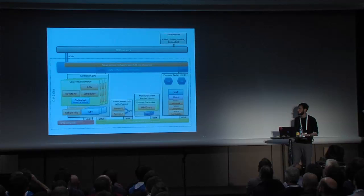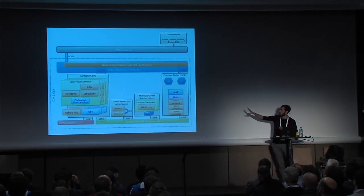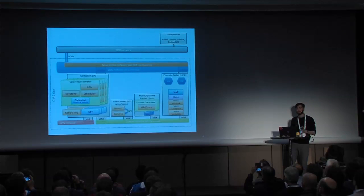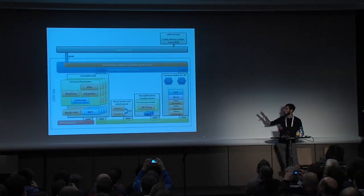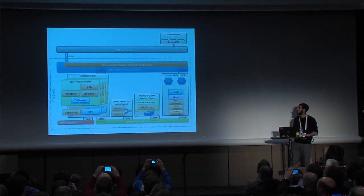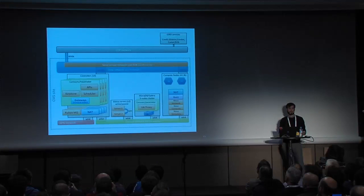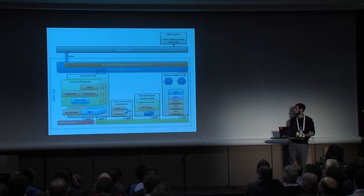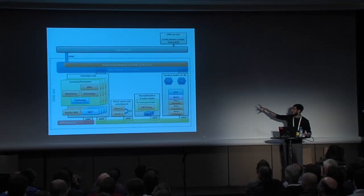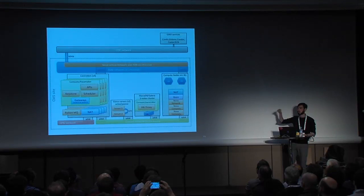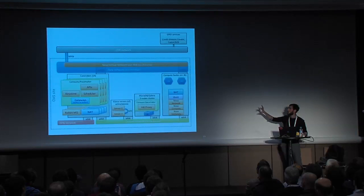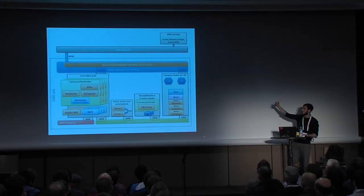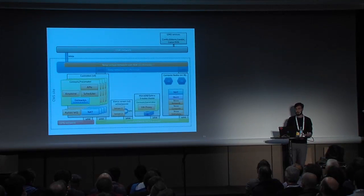We ended up with an architecture like this: on one side, four controller machines running our core services. In the middle, the Glance service with two instances and a dedicated MariaDB cluster with three machines. All remaining machines are just Nova hypervisors — nothing else, just running virtual machines. About networking: all our machines have only a one-Gbps link, because what we care about most is computation, not network traffic. They're connected to two networks — one for OpenStack internal traffic and one where virtual machines connect to the outside world.